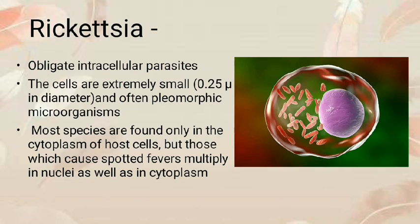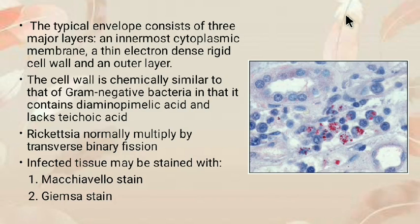They occur singly, in pairs, or in strands. Most species are found only in the cytoplasm of host cells, but those which cause spotted fever multiply in the nuclei as well as in the cytoplasm. They are very similar to gram-negative bacteria. The envelope consists of three major layers: an innermost cytoplasmic membrane, a thin electron-dense rigid cell wall, and an outer trilaminar layer. The cell wall contains diaminopimelic acid and lacks teichoic acid.